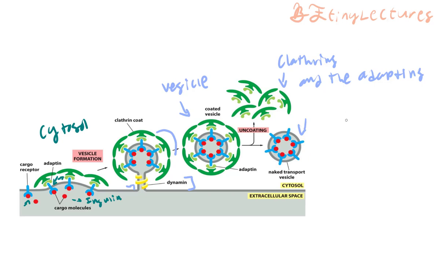Dynamin operates by hydrolyzing GTP — it uses the energy from GTP hydrolysis to cut the stem from the vesicle. So vesicle formation uses GTP as its energy source.